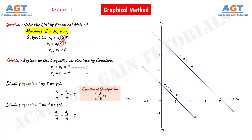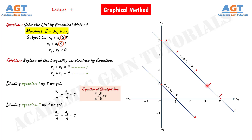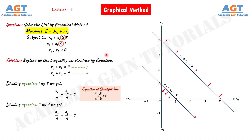Now we will look for inequalities and draw arrows on these two lines. According to the first condition, the first line will be greater than or equal to 4, so on line number 1 we place arrows in the opposite direction from the origin, because there is a greater than or equal to sign. According to the second condition, the second line will be less than or equal to 1, so on line number 2 we place arrows facing towards the origin, because there is a less than or equal to sign. Always remember: if there is a greater than or equal to sign, place arrows facing opposite to the origin; if there is a less than or equal to sign, place arrows facing towards the origin.